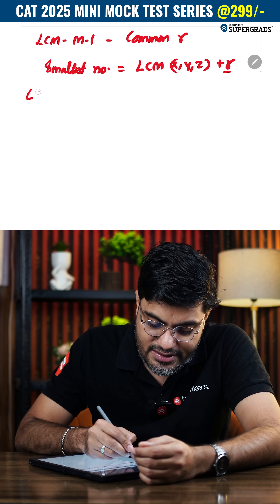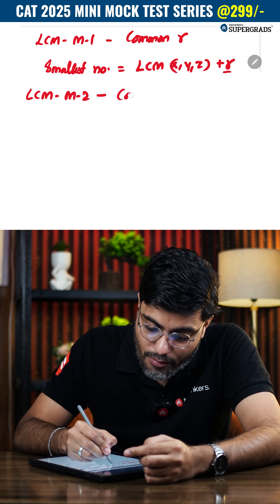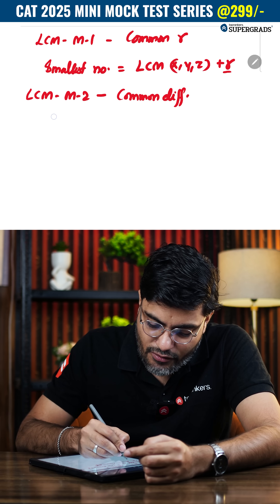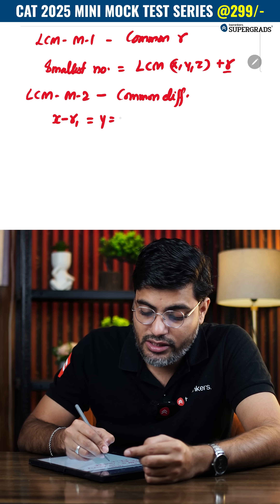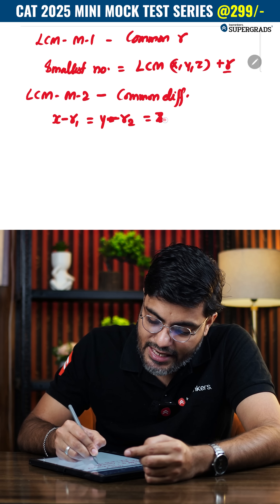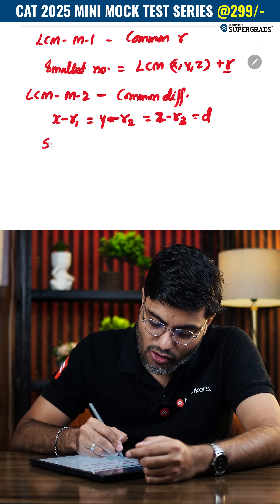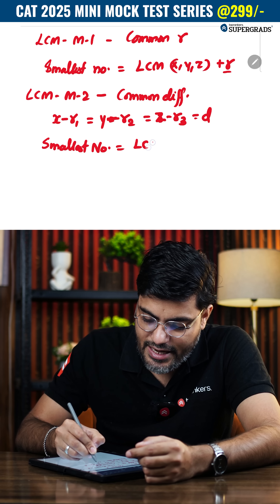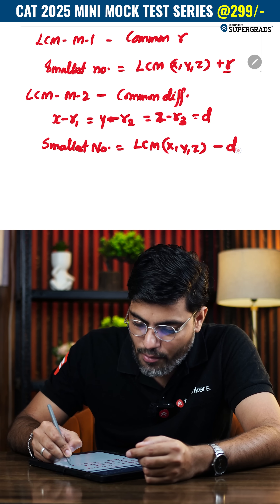LCM Model 2 is when you have a common difference. This means when you subtract x and r1, you get the same value as when you subtract y and r2, which is the same as when you subtract z and r3 — equal to common difference d. Here the smallest possible number will be LCM(x, y, z) minus the common difference d.